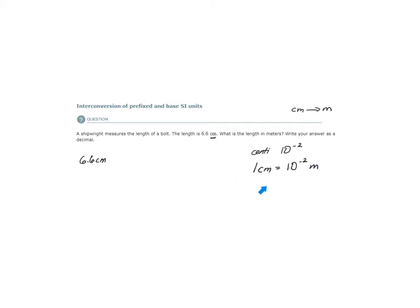How did we get this again? We just use the meaning of centi and that trick I showed you in previous topics. If you place a 1 in front of the prefix unit, here is our prefix, then the number of your base SI units, which is the meter in this case, is equal to the meaning of the prefix. The meaning of centi is 10 to the minus 2.